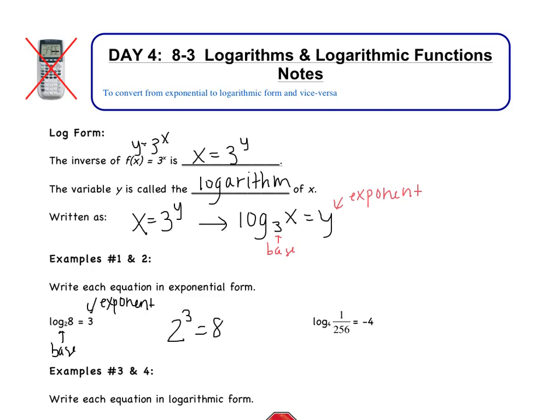Looking at the next one, the one on the right, it says log base 4 of 1 divided by 256 equals negative 4. So again, 4 right here is our base, negative 4 is our exponent. So the way to rewrite this in exponential form is the base 4 to the exponent negative 4 equals 1 over 256.